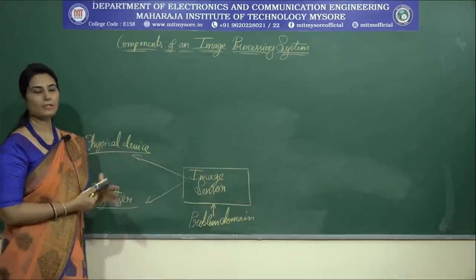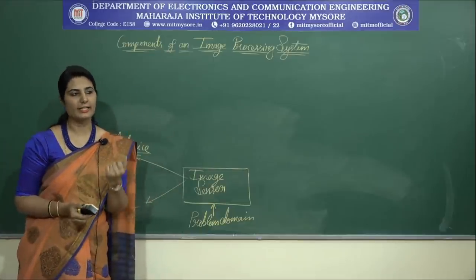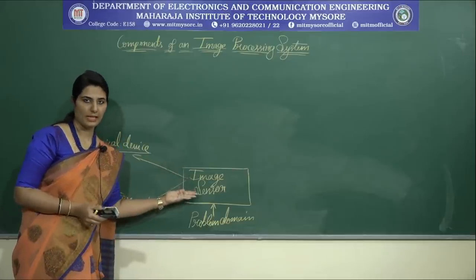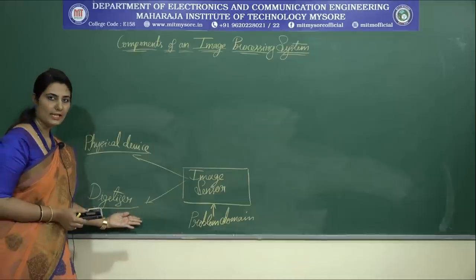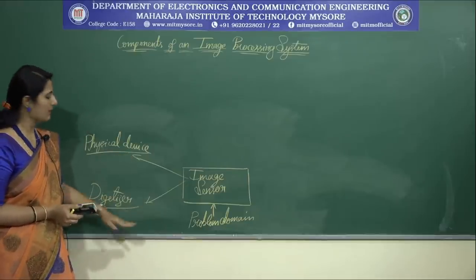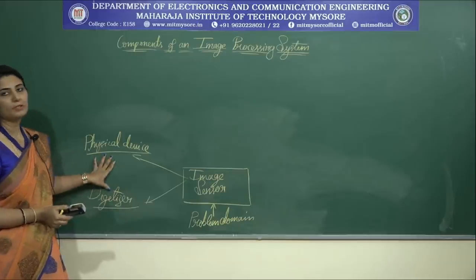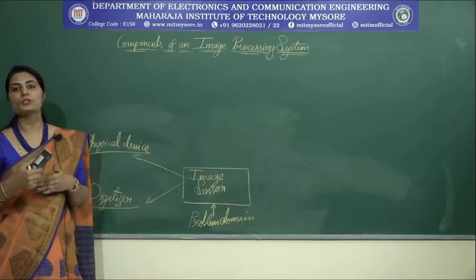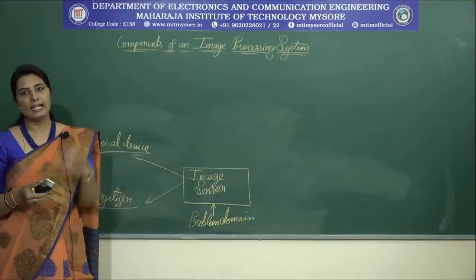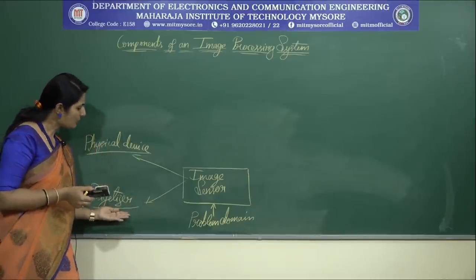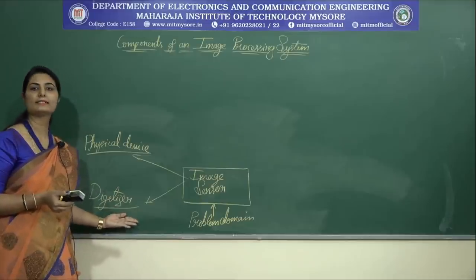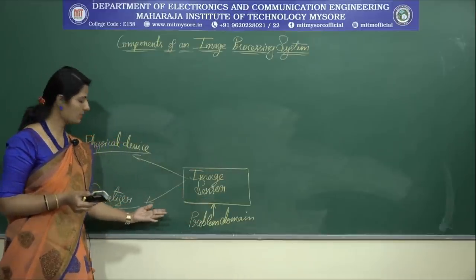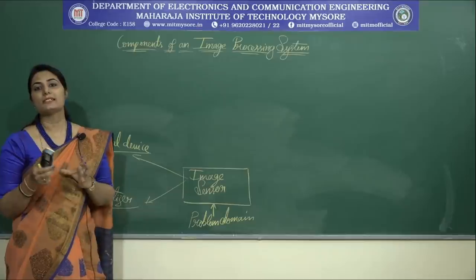The physical device is very sensitive to the energy radiated by the object we wish to image, and the digitizer is a device which converts the output of this physical device into digital form. A good example is a digital video camera, where the sensors produce electrical output corresponding to the light intensity received, and these electrical outputs are converted to digital form by the digitizer.